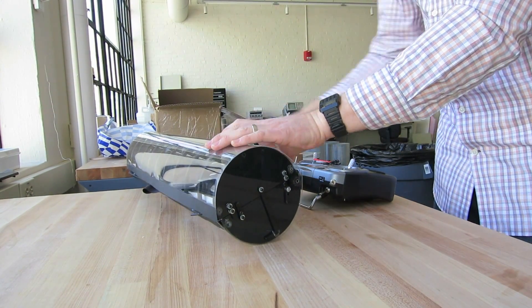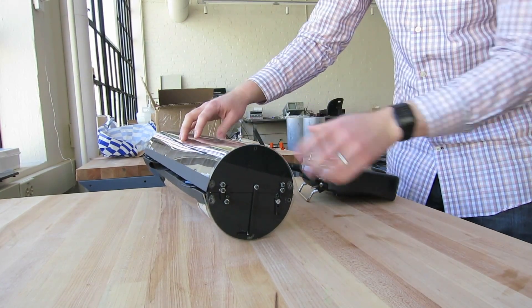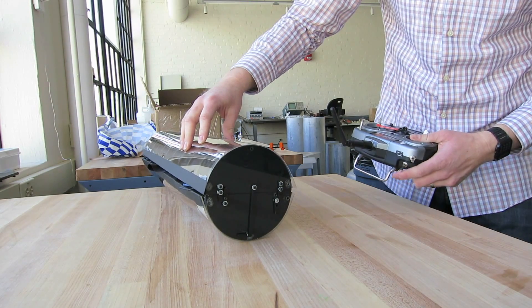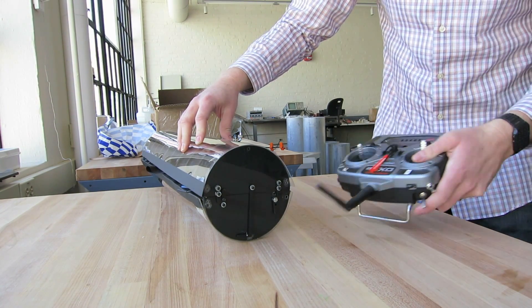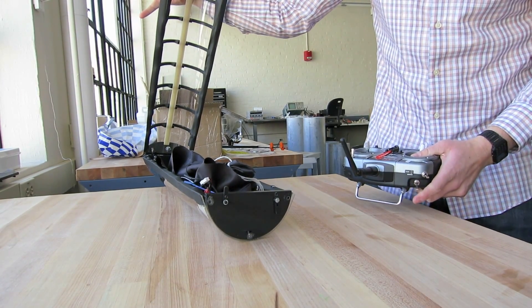And then the actual opening mechanism is actuated using this radio, it's wireless, and you can see here that when I press this trigger here, this servo moves the rod back and then it opens. So that's pretty much it, you can see that's how it works.